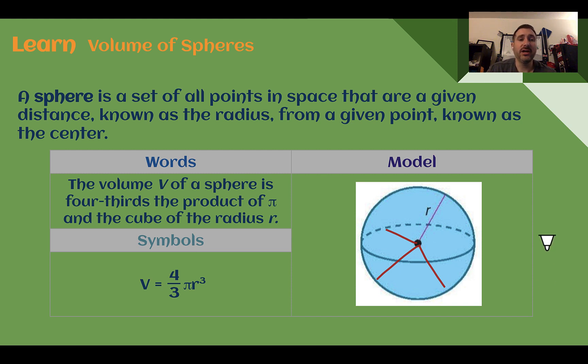The volume of a sphere is 4 thirds pi r cubed. So it's a little bit different than a cylinder or a cone. Instead of involving the height, it involves the radius again. So 4 thirds pi r to the third power.